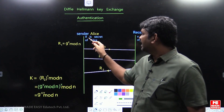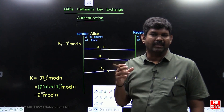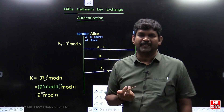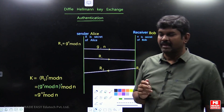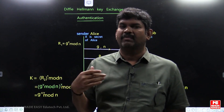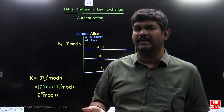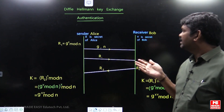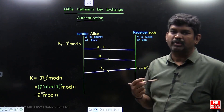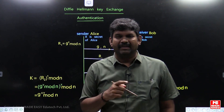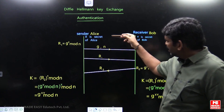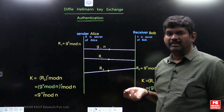X is the secret of Alice — comparable to a private key — meaning the sender will not transmit X on the channel. The concept here is that our target is not to transmit the data first, but to generate a common key between sender and receiver before actually transmitting data. X is Alice's secret and Y is Bob's secret, and neither X nor Y are transmitted on the channel.